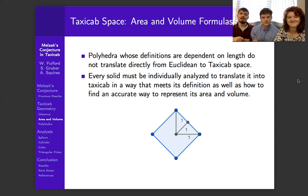You might say, what? That's not a circle. In taxicab space, it is because a circle is a bunch of points that are the same distance from the center. And in taxicab space, that's actually a diamond.